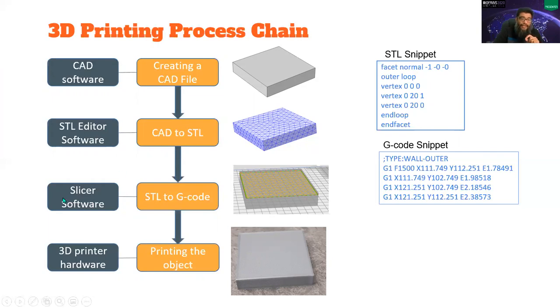And this STL file is then sent to a slicer software that converts it to G-code instructions. The G-code instructions can be like move instructions. These are instructions for the printer, like move from point A to B. This should be the speed. This should be the acceleration. This should be the temperature, etc. Then this G-code file is then sent to the printer hardware where the firmware executes the instructions sequentially to print the final object.